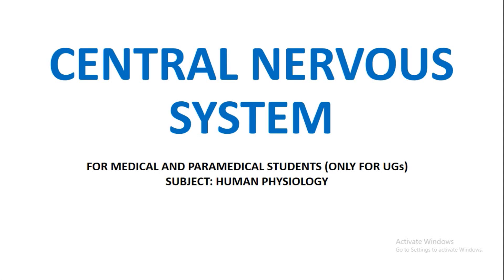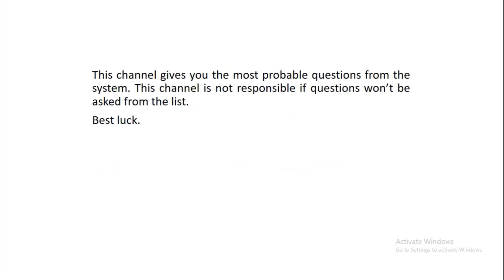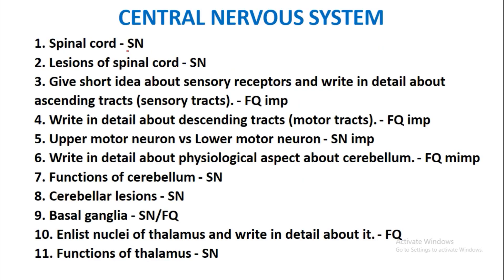Most probable questions from the central nervous system. Spinal cord will be asked as a short note — lesions of spinal cord as a short note — and it is one of the important short notes. Give a short idea about sensory receptors and write in detail about ascending tracts. Ascending tracts are also known as sensory tracts and will be asked as a full question.